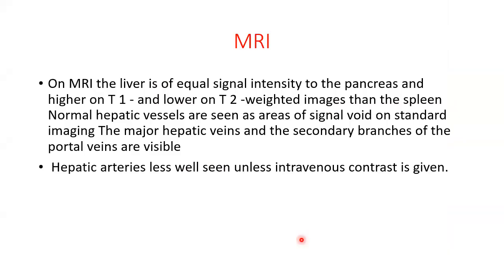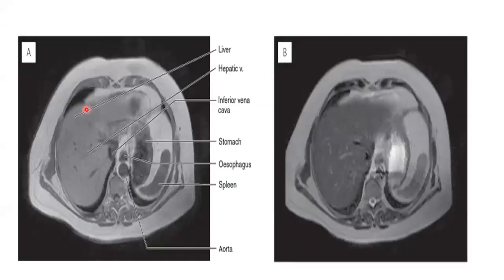On MRI, the liver is of equal signal intensity to the pancreas, higher on T1 and lower on T2 weighted images than the spleen. Normal hepatic vessels are seen as areas of signal void on standard imaging. The major hepatic veins and secondary branches of the portal veins are visible, while hepatic arteries are less well seen unless intravenous contrast is given. MRI shows the liver with its hepatic veins, inferior vena cava, stomach, spleen, esophagus, and aorta.